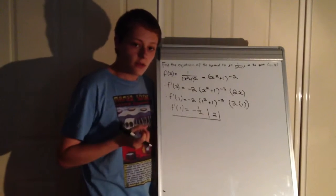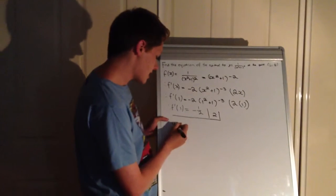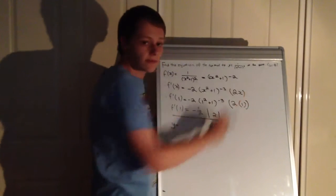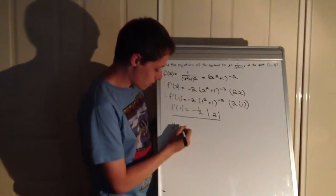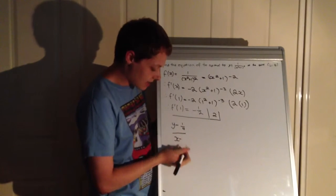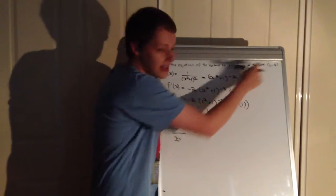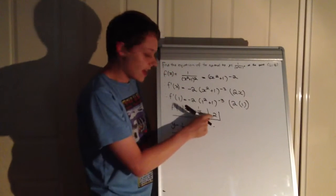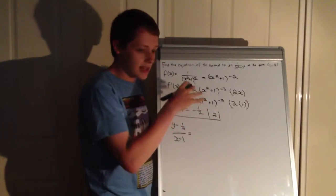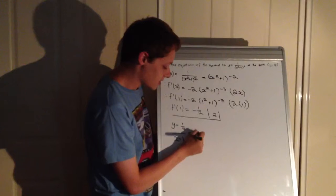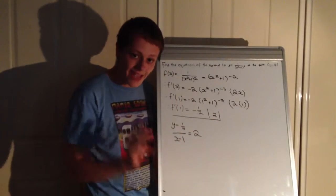So now what do we do? We simply have (y - 1/4) divided by (x - 1), and that equals the value that we just calculated from the derivative, and then using the inverse because of the linear algebra concept that I just explained.